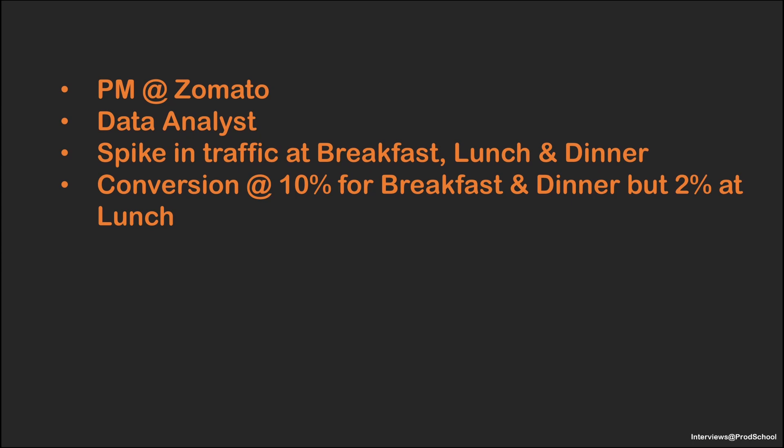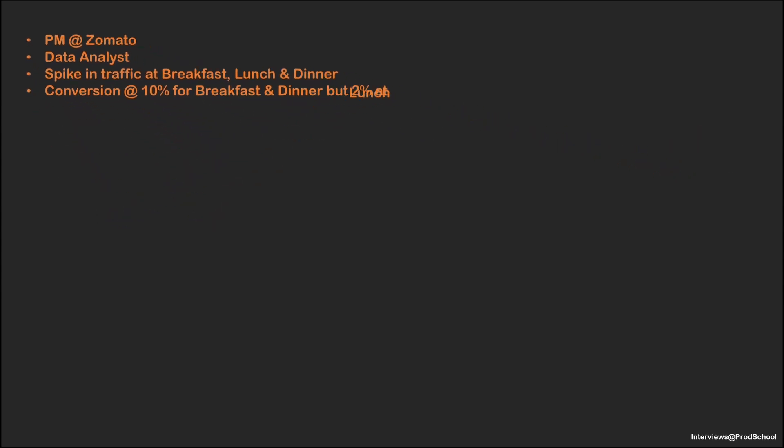Just to make sure I got the question correctly — I'm wearing the hat of a PM for Zomato and I'm reported by my data analyst that there is a spike at breakfast, lunch, and dinner times, but the conversion, while being at 10% for breakfast and dinner, is only 2% for lunch. Correct? Yes. Give me a minute to devise my approach.